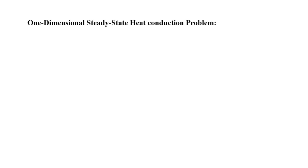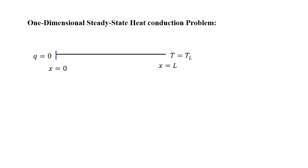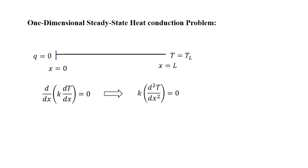Now, how do we use this formula? Let us consider an example of one-dimensional steady-state heat conduction. The domain has its left boundary at x=0 and right boundary at x=L. The left boundary has an adiabatic condition (heat flux q=0), and the right boundary is at constant temperature T=TL. The governing equation is d/dx(k · dT/dx) = 0, which, assuming constant thermal conductivity k, simplifies to k · d²T/dx² = 0.